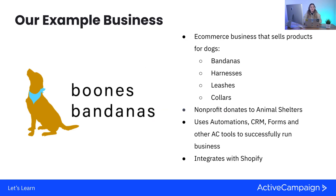Let's talk about our example business: Boon's Bandanas. Boon's Bandanas is an e-commerce business that sells products for dogs — bandanas, harnesses, leashes, collars — you name it, they have an accessory that's perfect for your dog. They also donate to animal shelters, so they have a nonprofit side to their business. For every bandana sold, they donate a bandana to a partner animal shelter and host adoption events every single month.